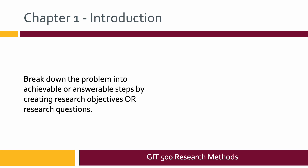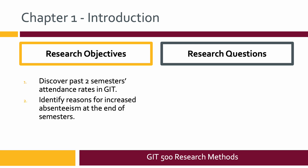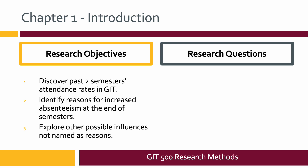You need to break down the problem into achievable or answerable steps by creating research objectives or research questions. You want to write research objectives or research questions — I'll give examples of both. For this research problem, my first research objective would be to discover the past two semesters' attendance rates in GIT. The second would be to identify reasons for increased absenteeism at the end of semesters, and the third to explore other possible influences not named as reasons. Each of these can produce concrete results.